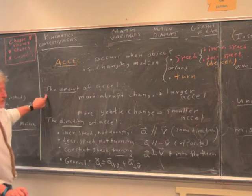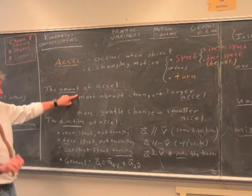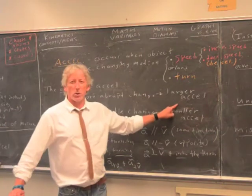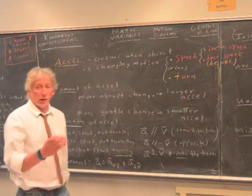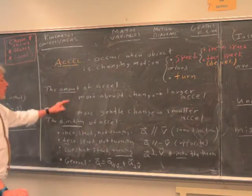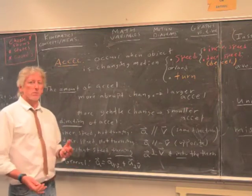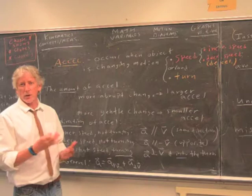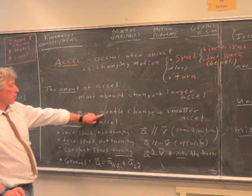So the amount of acceleration — how much acceleration do you have? Get a feel for it like this: if it's a more abrupt change, then you have a larger acceleration. Slam on the gas, slam on the brakes, crank the steering wheel — those are large accelerations, generally not safe. A more gentle change is going to be a smaller number. A gradual change is usually what you want, especially if you're traveling on the freeway. A larger number is an abrupt change, a smaller number is a gentle change.